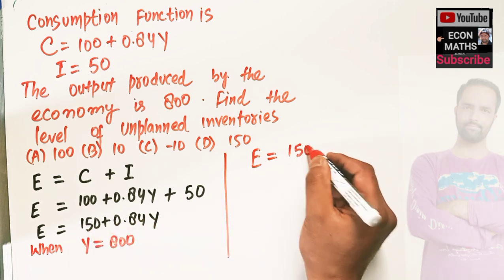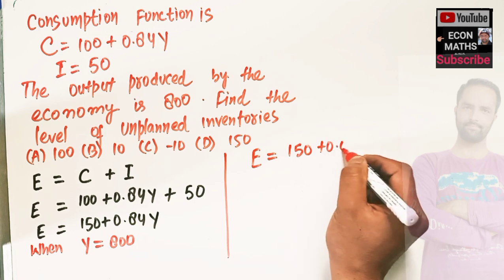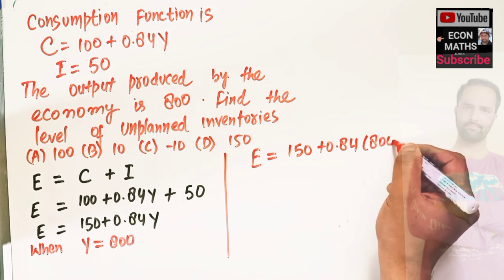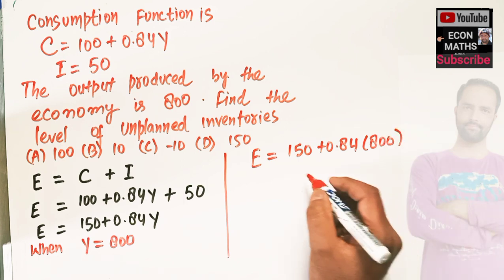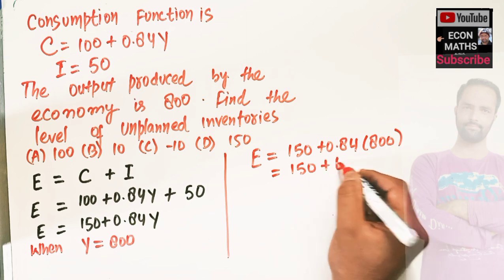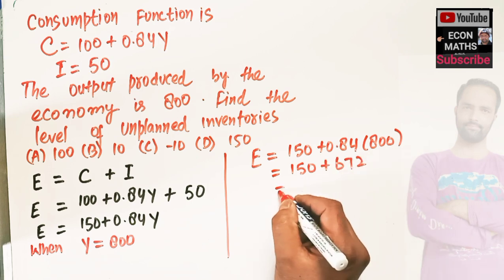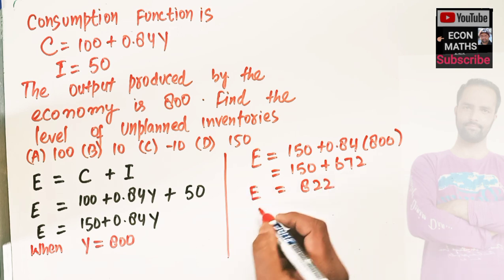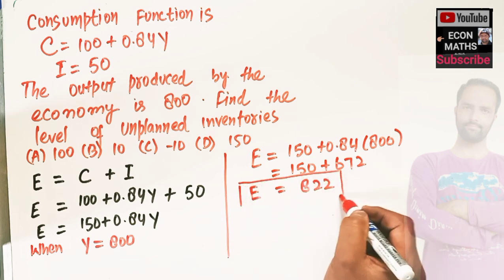We have 150 + 0.84 times 800. This becomes 150 + 672, which comes out to be 822. So aggregate expenditure is 822.